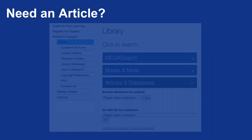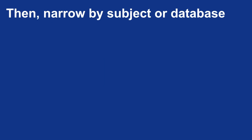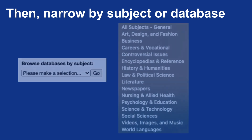If you're looking for an article, you can click on Articles and Databases, and you'll have choices which include being able to browse your databases by subject or being able to browse through that specific database. Looking a little bit closer, you're able to narrow by subject or by database.